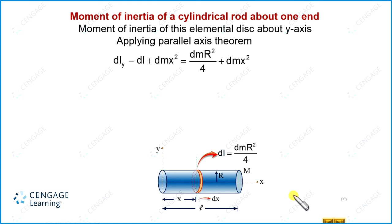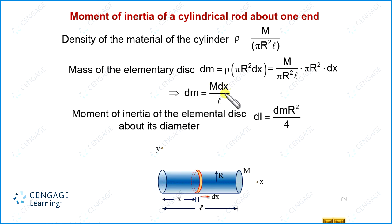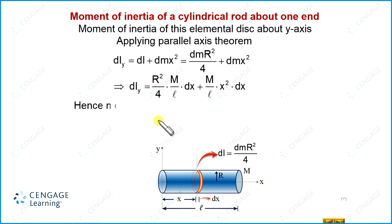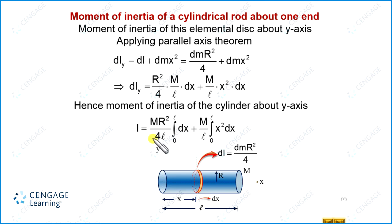We substitute the value of dm, which equals M·dx/l. Since m·r²/(4l) and m/l are constant terms, we write them outside the integral with limits 0 to l. So I equals (mr²/4l)∫₀ˡ dx plus (m/l)∫₀ˡ x²·dx.